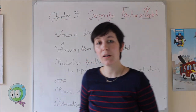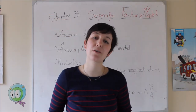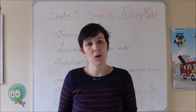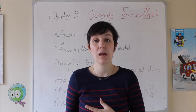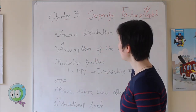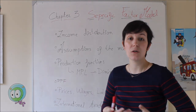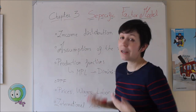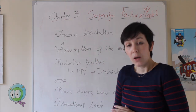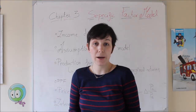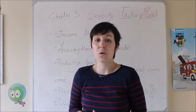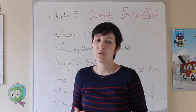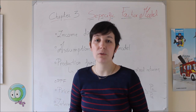Hello everyone. Today we are going to see this new model, the Specific Factor model, which is a little bit different from the Ricardian one. We are going to see slowly the main differences between them. One of the main differences is going to be in terms of the implication of international trade related to income distribution. In the previous chapter, everyone has the same weight, so there wasn't any problem about income distribution. Here we are going to see that not everyone is going to get the same remuneration.